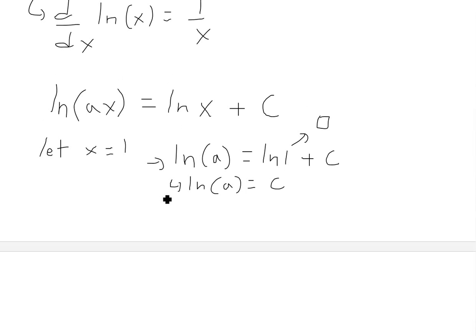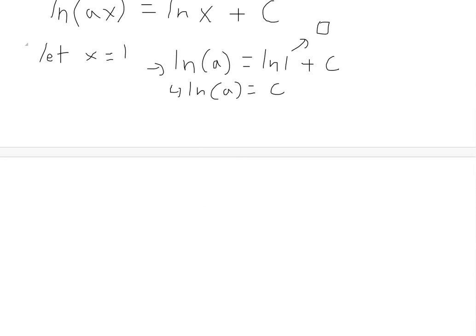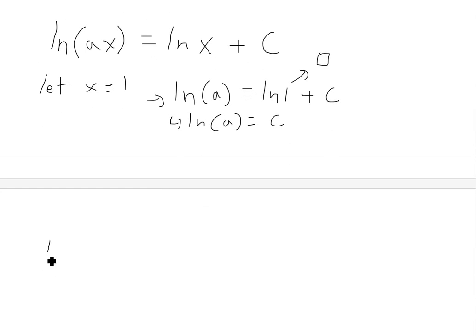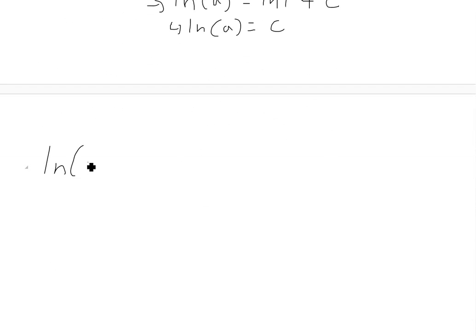So what this means is, if we add this C inside here, we get ln(ax) equals ln(x) plus the constant, which is going to be ln(a). So basically this is our proof.